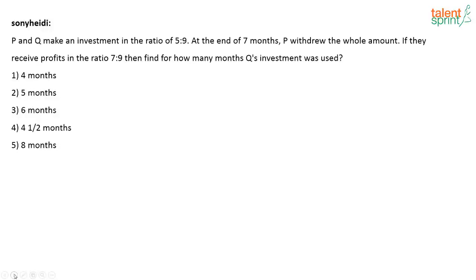The next question was also posted by Sony. This question is on partnership. P and Q make an investment in the ratio 5 is to 9. At the end of 7 months, P withdrew the whole amount. If they receive profits in the ratio 7 is to 9, then find for how many months Q's investment was used.